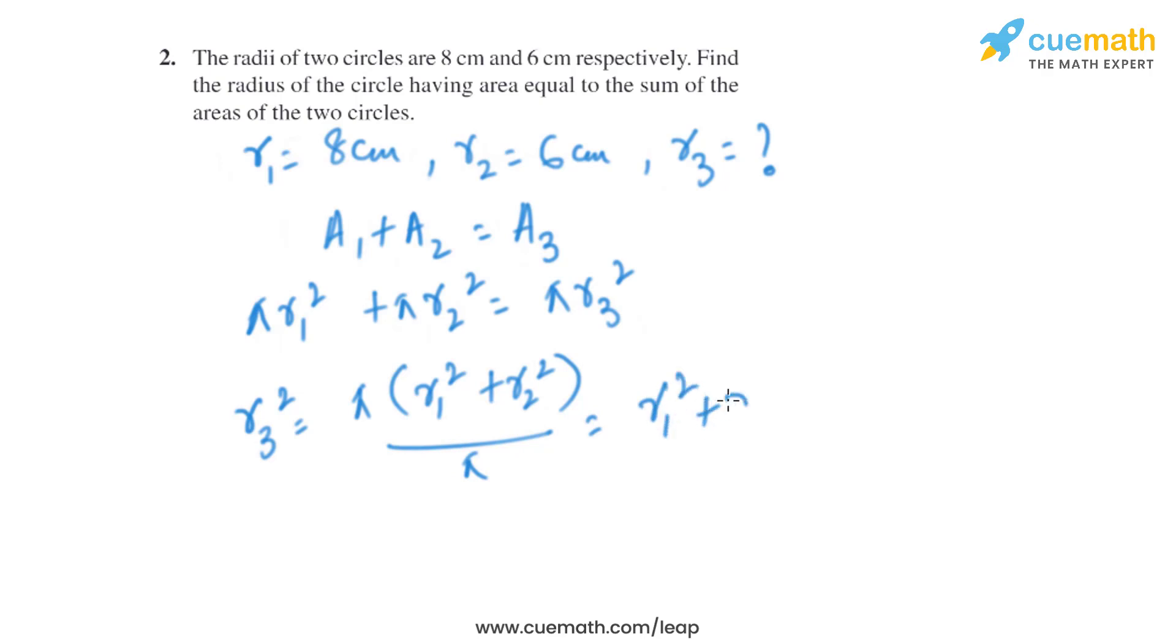We know the value of r1 and r2, so it is 8² plus 6², which equals 100. So we have r3² equals 100, which means r3 equals the square root of 100, which is 10 centimeters. So the radius of the circle is 10 centimeters.